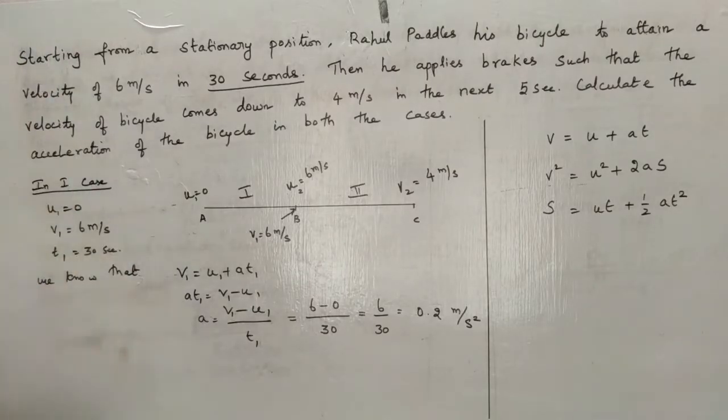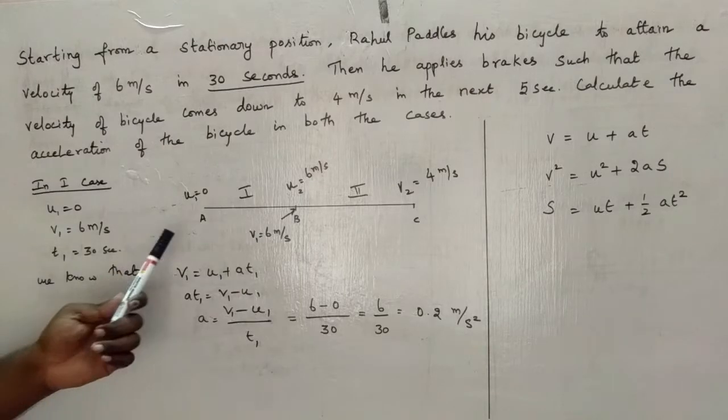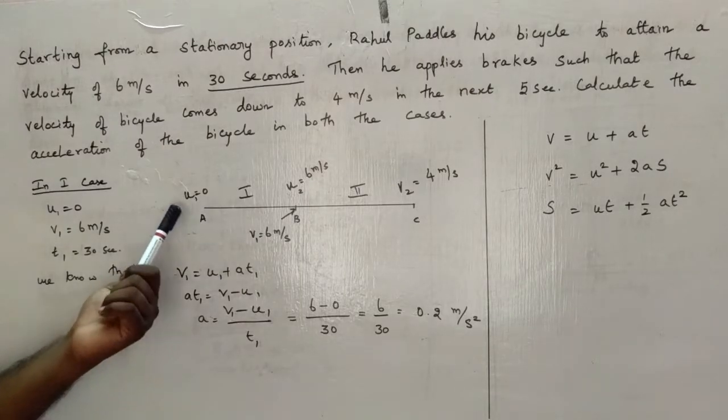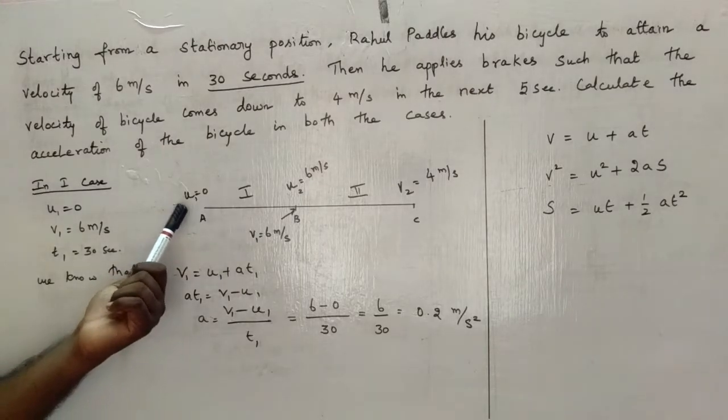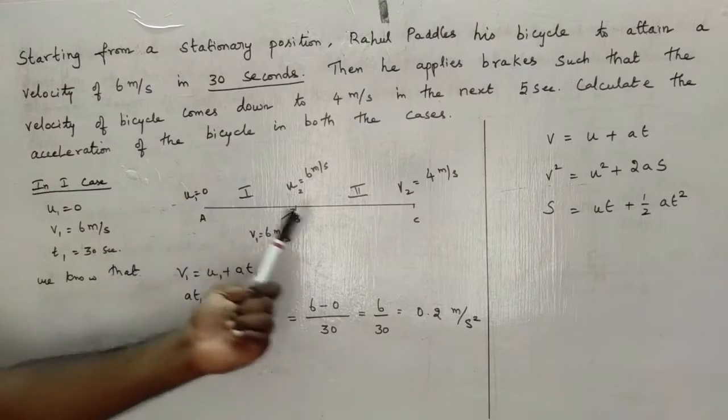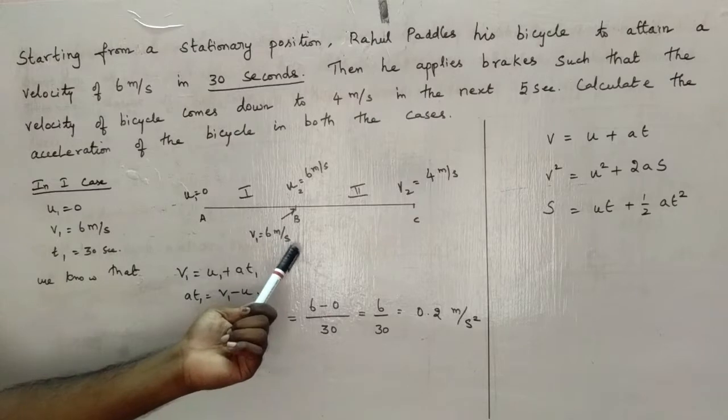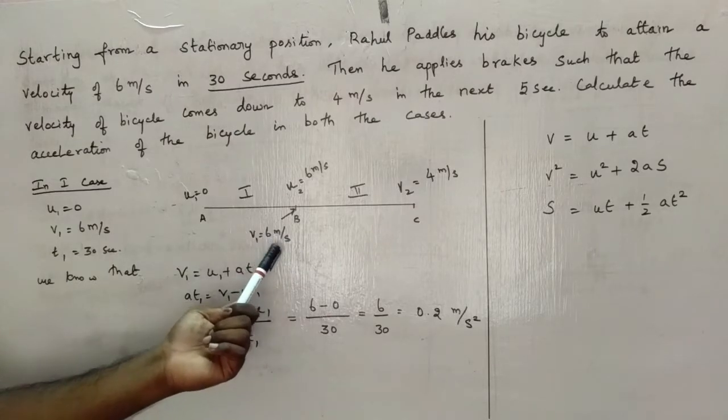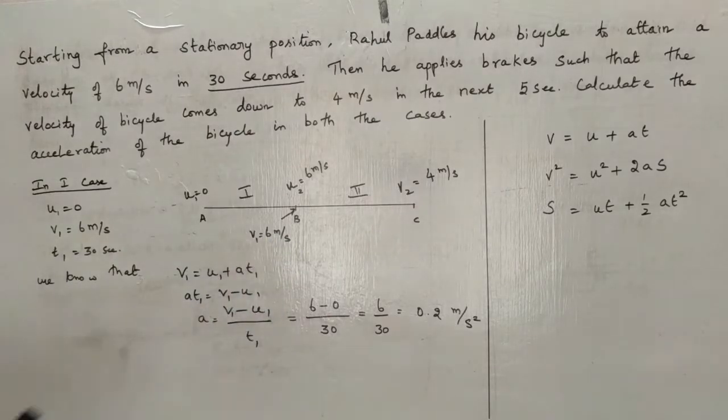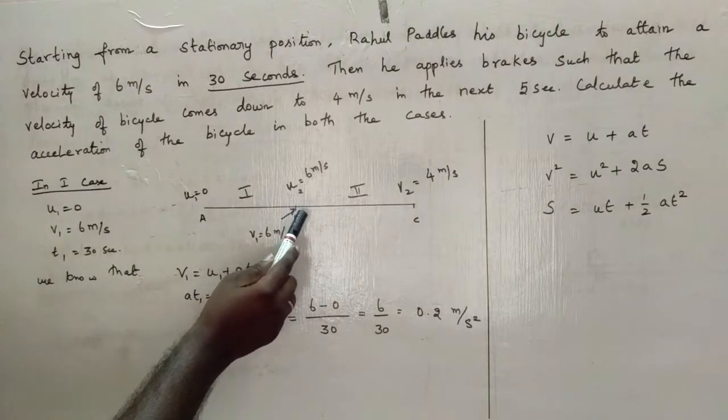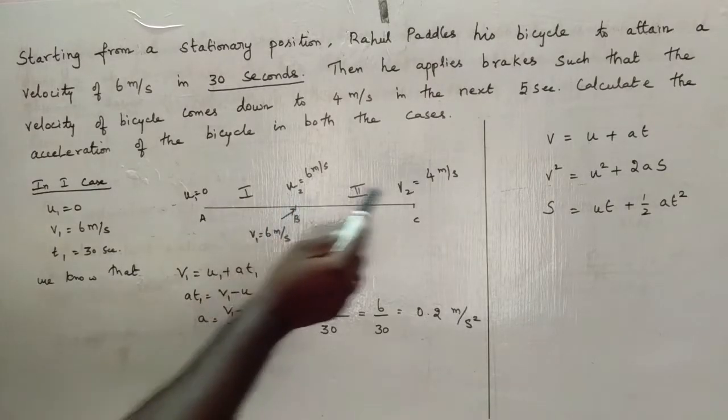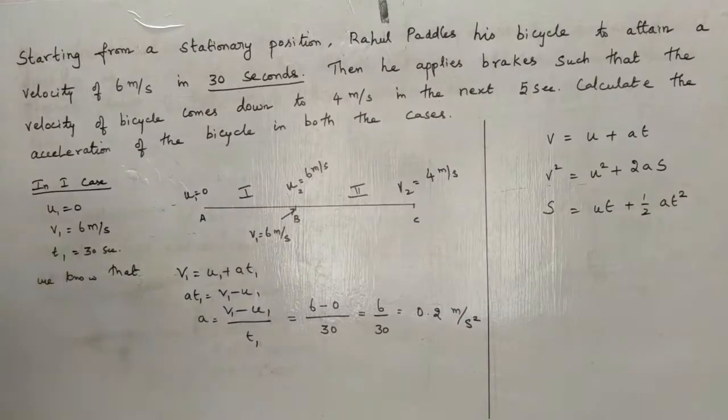So in order to understand the question, I am drawing this diagram here. Initially, Rahul is starting with the initial velocity equal to 0, and when he is reaching point B, the velocity is 6 meters per second. Then he is applying the brake at point B so that the velocity reduces to 4 meters per second.